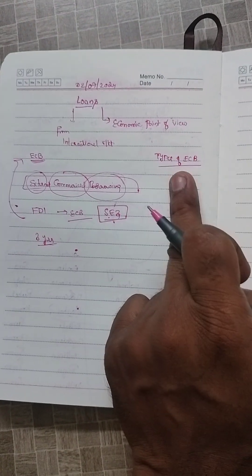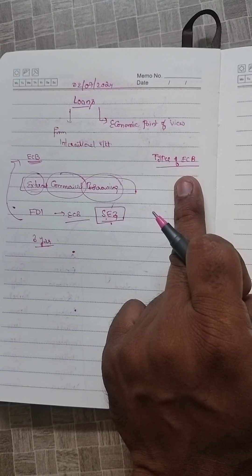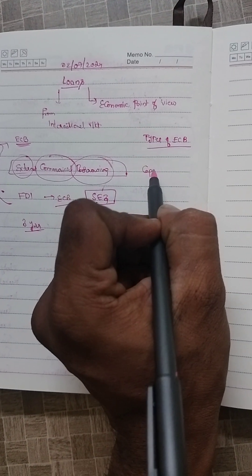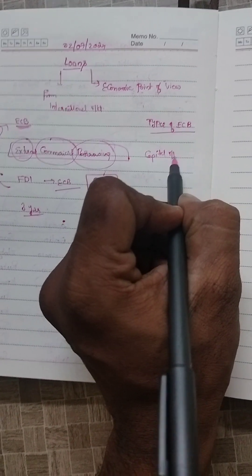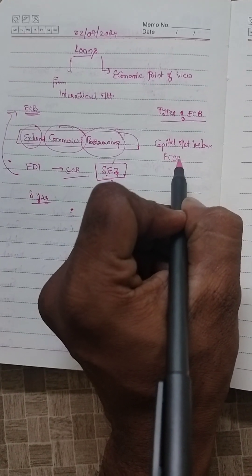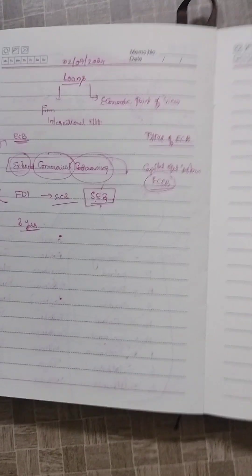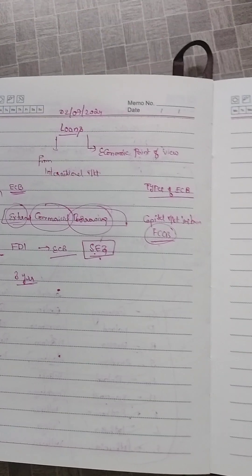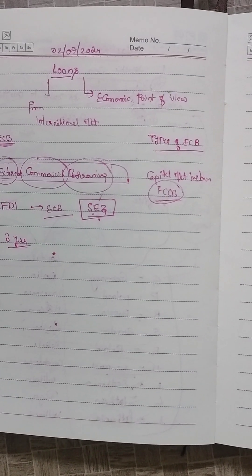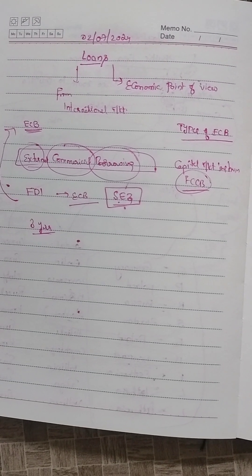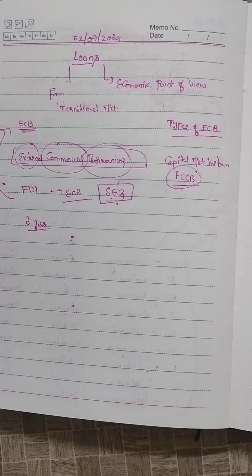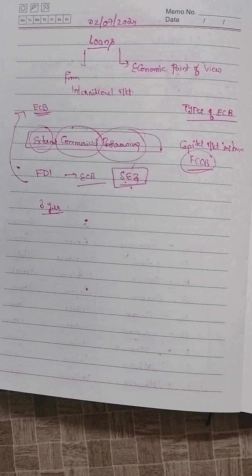Now, coming to types of ECB. It is a capital market instrument: FCCB (foreign currency convertible bond borrowing). In India, these are included in FDI only when converted into equity. Otherwise, FCCB is treated as ECB.